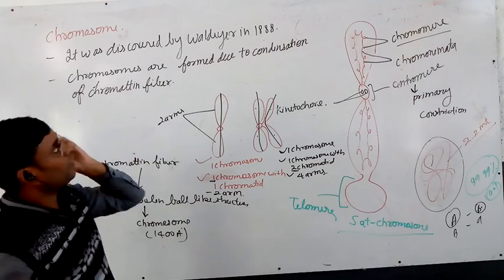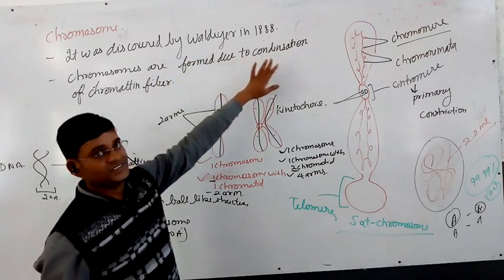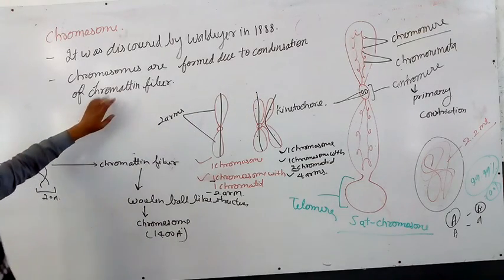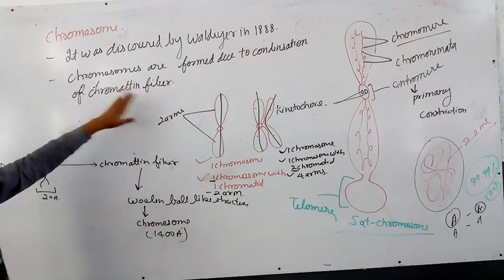First point: it was discovered by Waldeyer in 1888. Next point: chromosomes are formed due to condensation of chromatin fibers.